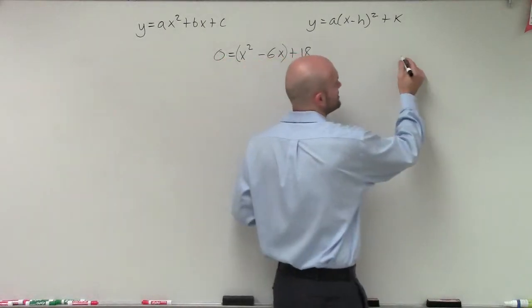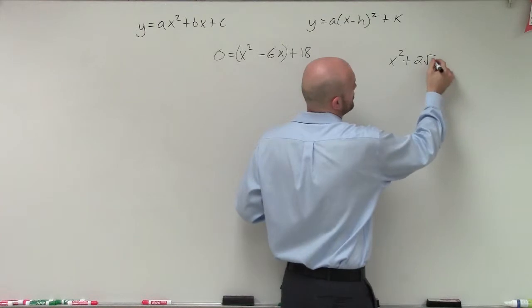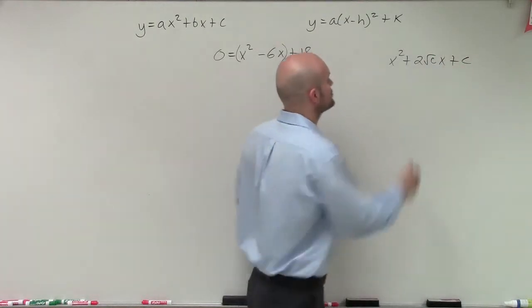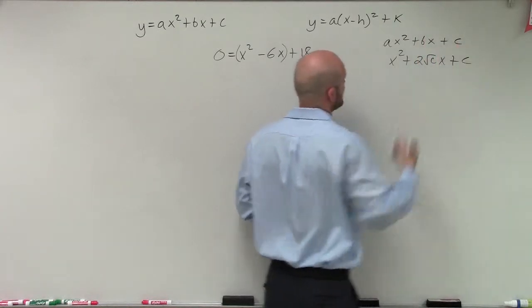And remember, a perfect square trinomial is in the form of x squared plus 2 times the square root of cx plus c. Now, usually we say, well, what happened to ax squared plus bx plus c?